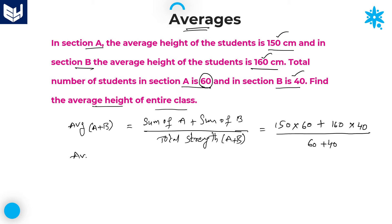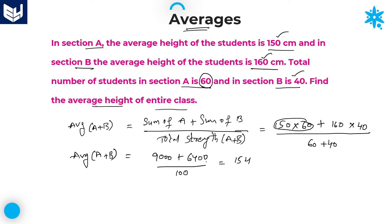The average of the entire class: 150 into 60 is 9,000, plus 160 into 40 is 6,400. Whole divided by 60 plus 40, which is 100. Adding the numerator: 9,000 plus 6,400 equals 15,400, divided by 100. The two zeros cancel, giving 154. Therefore, the required average of the entire class is 154 cm. These kinds of problems are called weighted average problems.